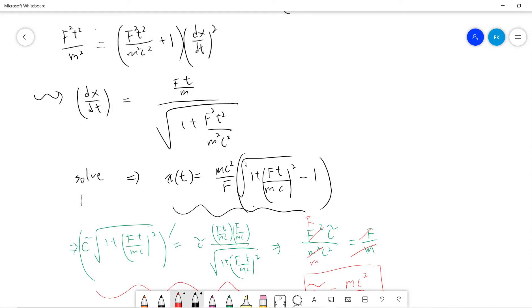And then you can do a simple exercise that if you take the Taylor expansion, take a square root, then you will get the original answer, like 1/2 at², which is ft/m.